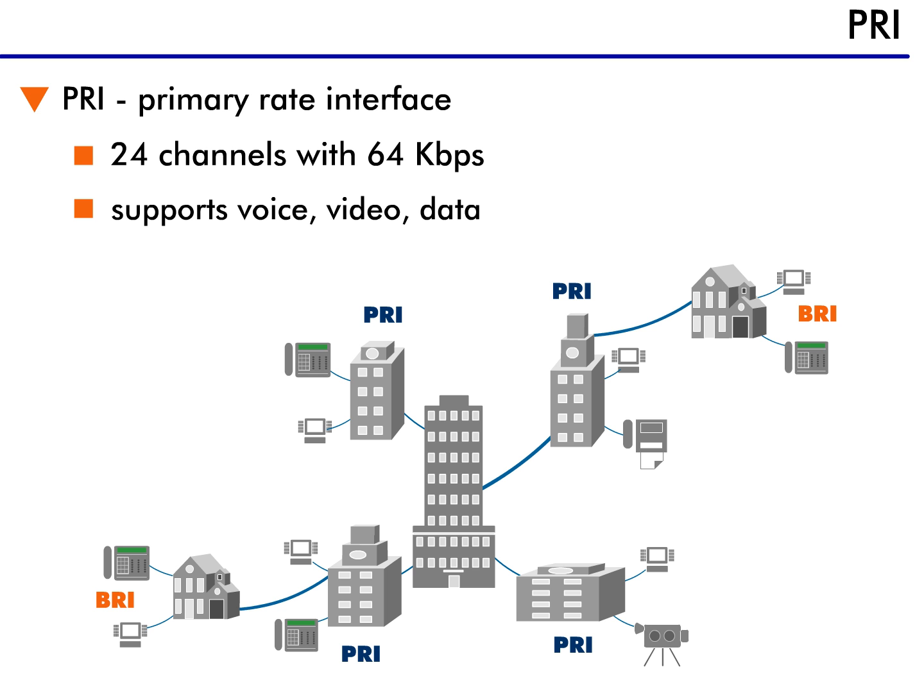In a typical installation, you would have many BRI connections from remote offices or residences connecting into one or more PRI connections. This allows the PRI to aggregate the connections into a single system. Many businesses like to use the ISDN PRI connections for video conferencing because they can combine many channels to obtain the quality of video they need.